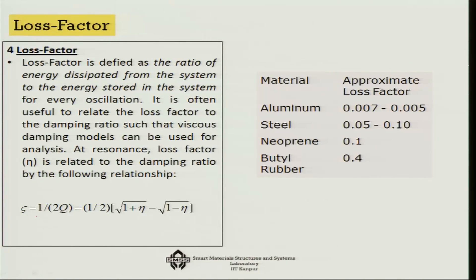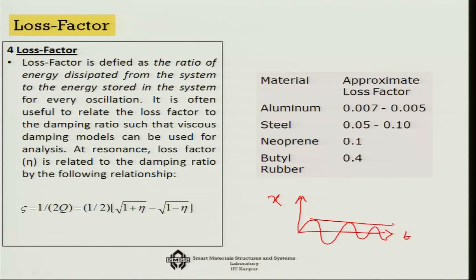In an underdamped situation, the response is cyclic but the amplitude gradually decreases. For one particular cycle, you find the ratio of energy dissipated to energy stored in the system. That gives the loss factor eta, which is a material property related to both the quality factor Q and the damping ratio zeta.